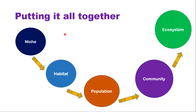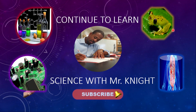Let's put it all together. In an ecosystem, you have a niche — the role of the organism. Then the place where organisms live, which is called habitat. In that habitat you have a population — a specific species of organism totaling all individuals in that area. When different populations come together, we have a community. From the community you have the ecosystem, where the non-living world and the living world come together and interact. That's the end of this short lesson on ecosystem. Keep watching and feel free to subscribe for future videos.